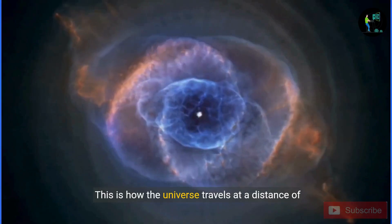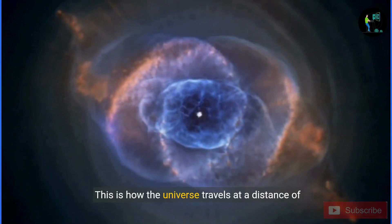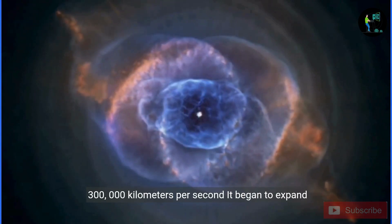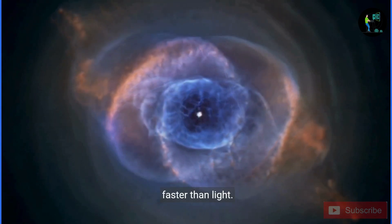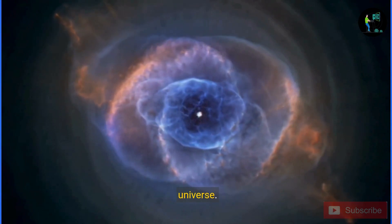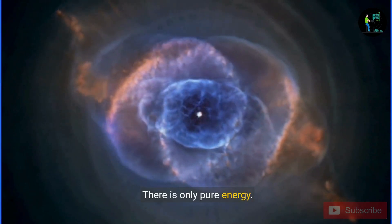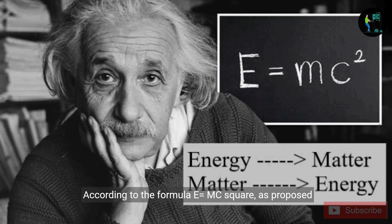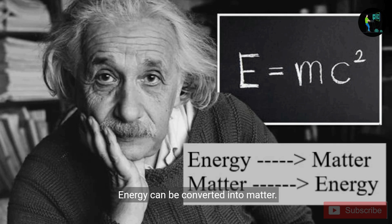This is how the universe travels at a distance of 300,000 kilometers per second. It began to expand faster than light. There is no matter in this rapidly expanding universe. There is only pure energy. According to the formula, E equals mc squared, as proposed by Einstein, energy can be converted into matter, and matter can also be converted into energy.